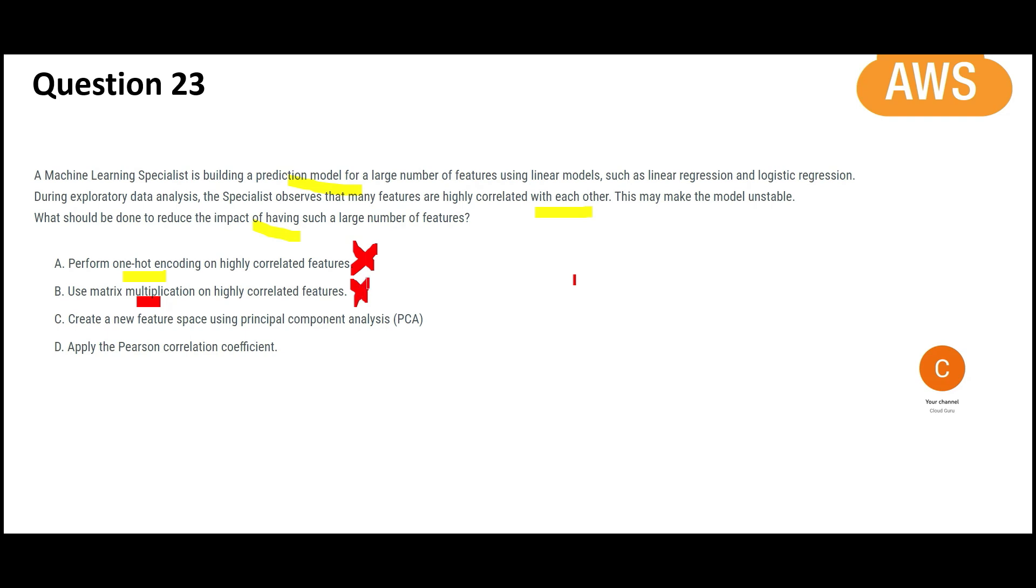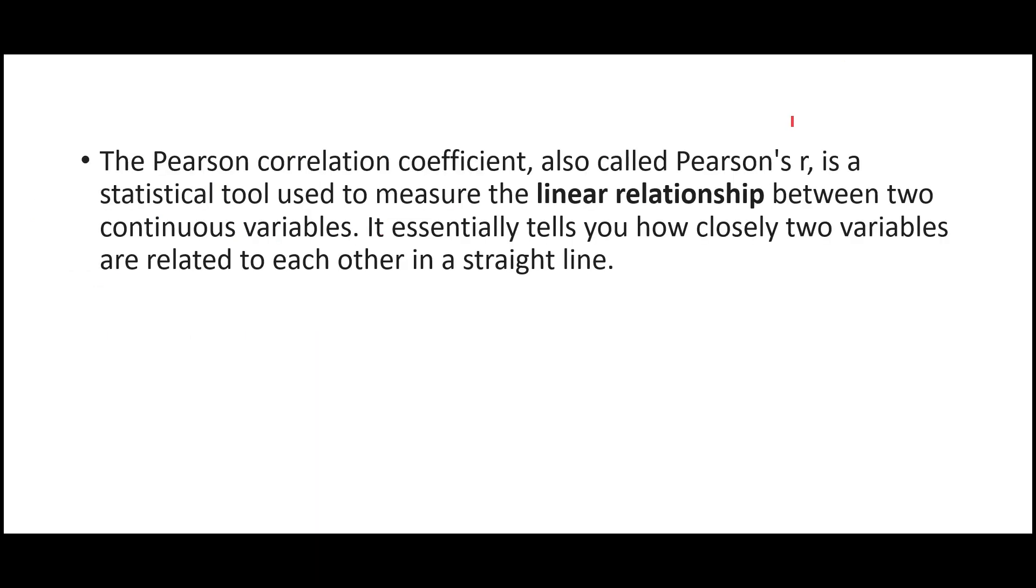And now let us look at D. That is your Pearson correlation. This is actually a statistical tool. Why we use this? To measure linear relationship between two continuous variables. But here, we already know that there is correlation. We don't need this guy to tell us that there is correlation. We already know.